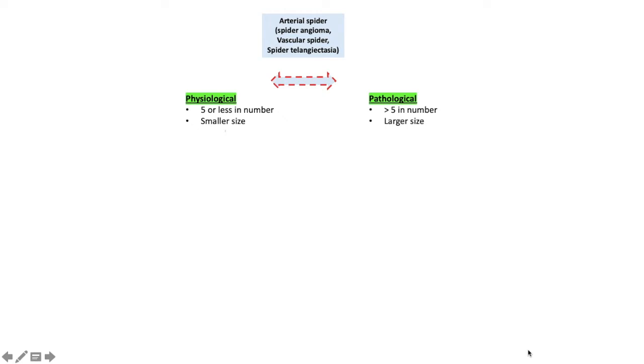What are the causes of physiological spider? Two percent of healthy individuals, especially older age, and pregnancy. These are the two physiological causes of spider angioma.